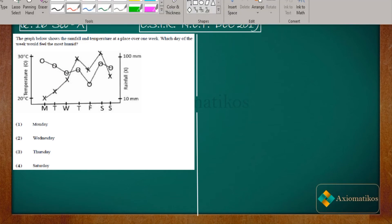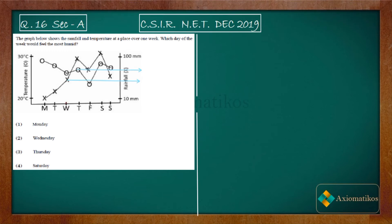On Wednesday, rainfall is less compared to Thursday and Saturday, though it is higher than Monday. Temperature on Wednesday is also less in comparison with Thursday and Saturday. Because both rainfall and temperature are less on Wednesday, we will have less humidity in the atmosphere around us.